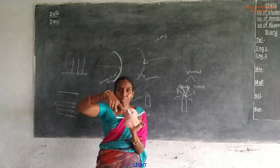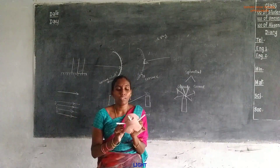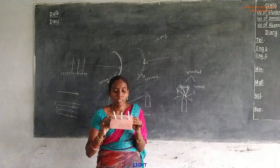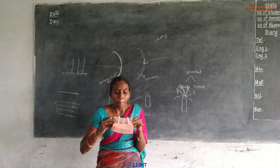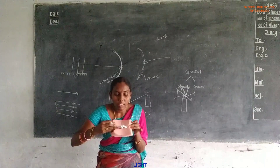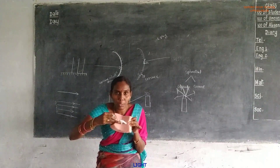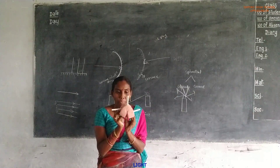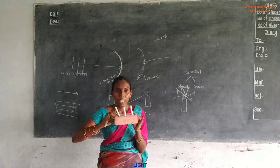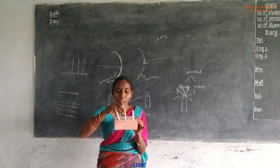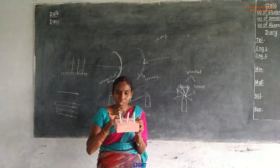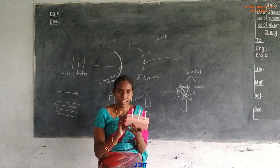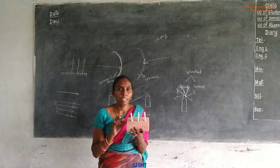Divergent rays originate from the same point but move in different directions. If three rays are moving from different sources but meet at the same point, these are all called convergent beam. If they spread out, these are all called divergent beam. By using this explanation, we can explain how to draw the normals to the plane surface and bent surface.